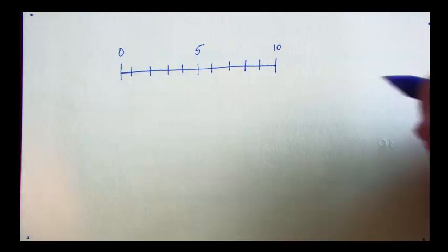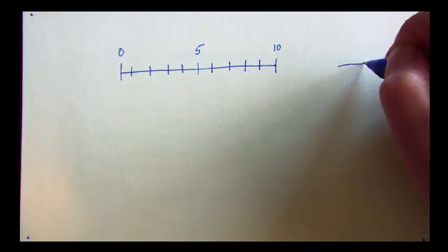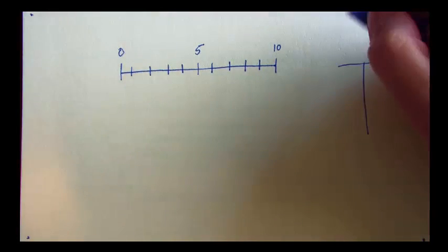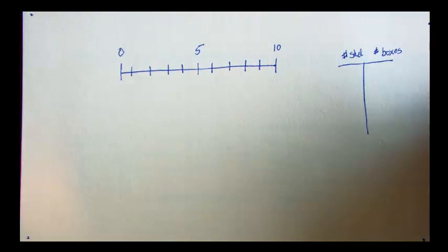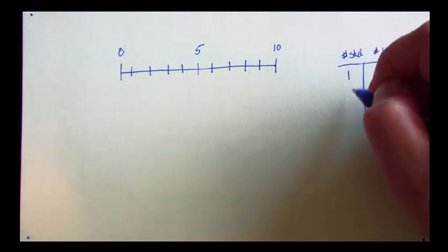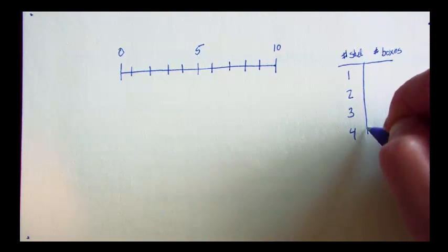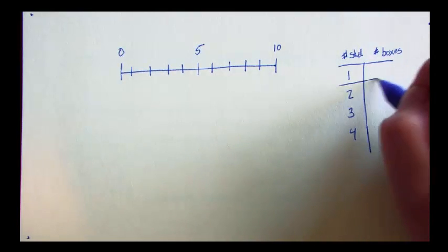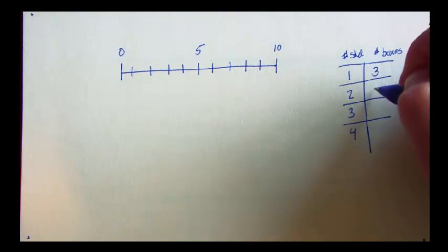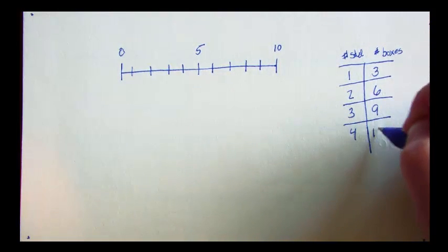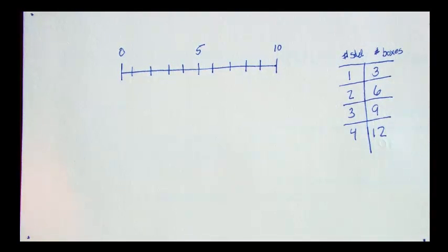If I were to have a table that showed the relationship between the number of students and the number of boxes, and I were to have 1, 2, 3, 4, and so on, and for each student I had 3 boxes, this is what my table would look like.